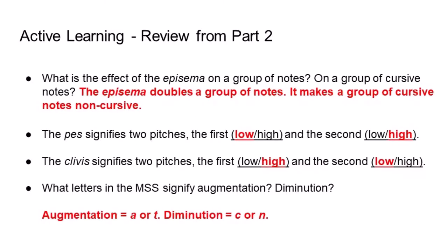The epistema doubles a group of notes; it makes a group of cursive notes non-cursive. The pez signifies two pitches, the first low and the second high. The clevis signifies two pitches, the first high and the second low. Augmentation or lengthening is signified by the letter A or T in the manuscripts. Diminution is signified by C or N.